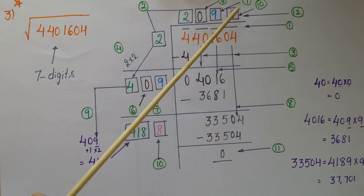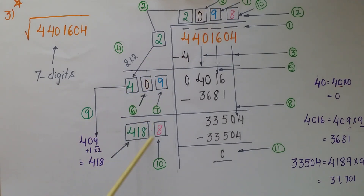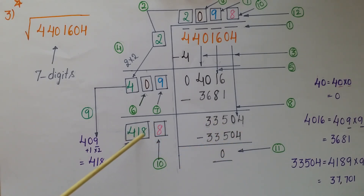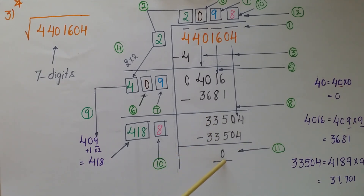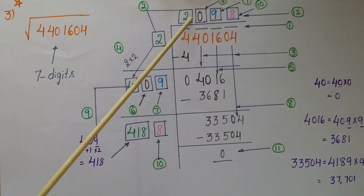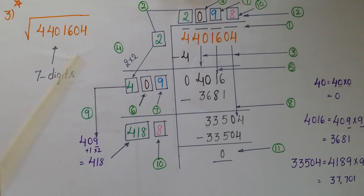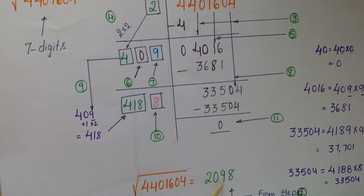Find a digit for the divisor 418_ such that the product is ≤ 33504. Try 9: 4189 × 9 = 37701, which is greater. Try 8: 4188 × 8 = 33504. Write 33504 and subtract — remainder is 0. The quotient is 2098, which is the square root of 4401604.